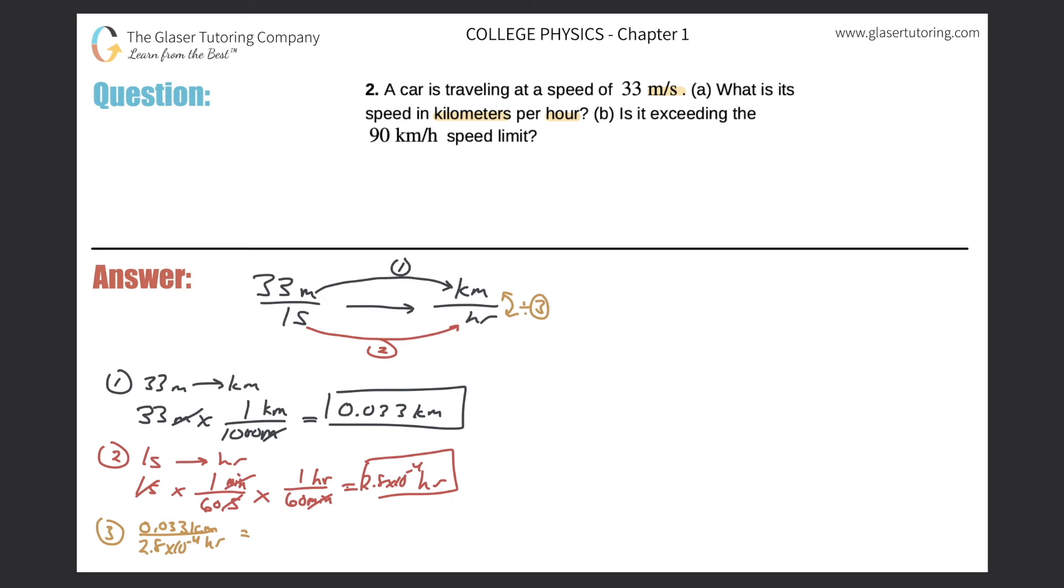When I do this math, I'm just going to plug it into the calculator. The answer comes out to about, I'm going to round slightly, 119 kilometers per hour. That's the answer to part A.